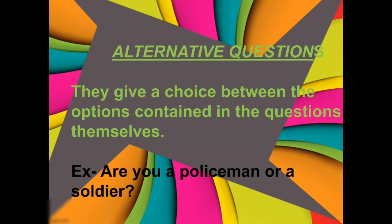Now we are moving to our next kind: alternative questions. It's very easy. Alternative questions give a choice between the options. Aap sabko pata hai choice kya hoti hai — when you are having a number of options and you have to choose one. Alternative questions give us choice between options which are there in the question itself. Like: are you a policeman or a soldier? Aap ne yaha pe choice mili na — policeman or a soldier. Such kind of questions which give us choice in the question itself — those are alternative questions.